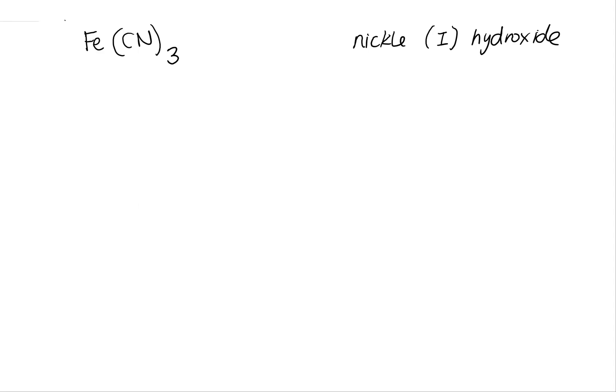So here I have a chemical formula, and I can recognize my chemical symbol here as iron. And this right here is a polyatomic ion.